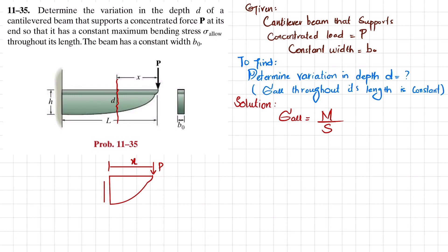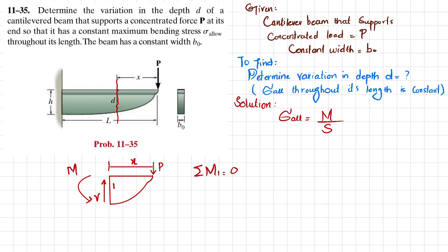Here you have a load of P, this distance is x, and when you cut the beam you will have a shear force and a reaction moment as well. You can see that this force will produce a moment, so the reaction moment should be opposite to that. Let this be point one. Sum of all moments about point one is equal to zero.